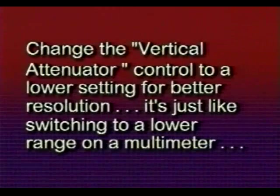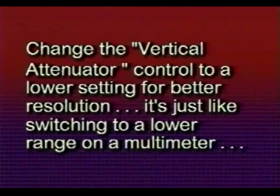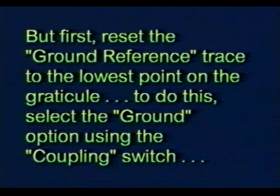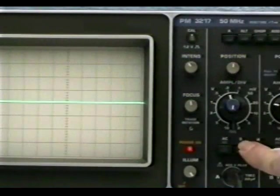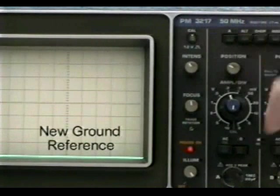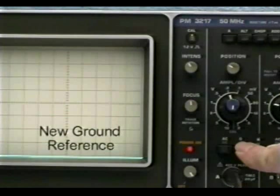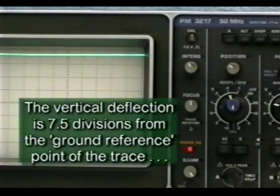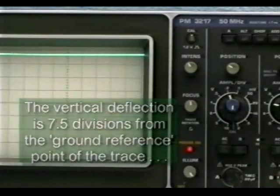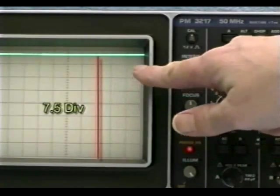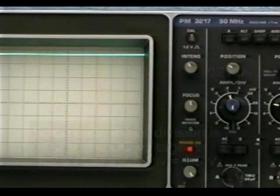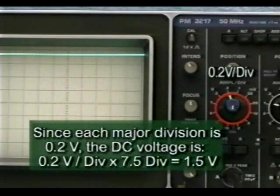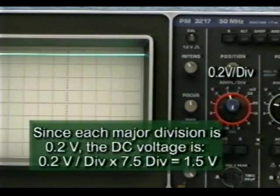Let's change the vertical attenuator control to a lower setting for better resolution — it's just like switching to a lower range on a multimeter. First, let's reset the ground reference trace to the lowest point on the graticule. To do this, select the ground option using the coupling switch, then use the vertical position control to set our new ground reference. Now the vertical deflection is 7.5 divisions from the ground reference trace. Since each major division is 0.2 volts, the DC voltage is 0.2 volts per division multiplied by 7.5 divisions, or 1.5 volts.